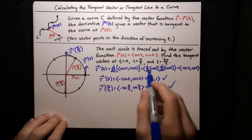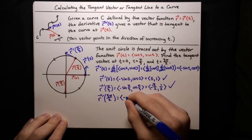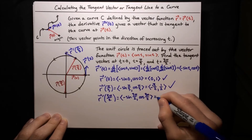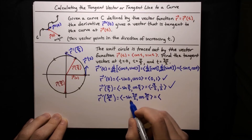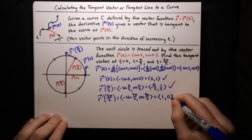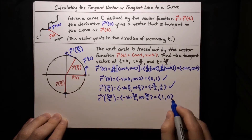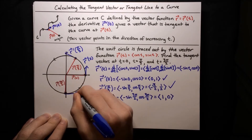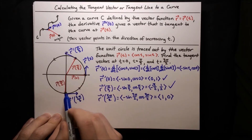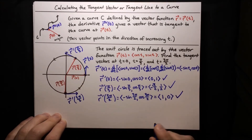Let's do the last one: t equals 3 pi over 2. R prime of 3 pi over 2 is negative sine of 3 pi over 2 and then cosine of 3 pi over 2. Sine of 3 pi over 2 is negative one, so applying a negative gives us positive one, and cosine of 3 pi over 2 is zero. So r prime of 3 pi over 2 equals one, zero. Starting at the point r of 3 pi over 2 and going one unit to the right and zero units up — just horizontal. That's very tangent, going in the correct counterclockwise direction. There are our tangent vectors.